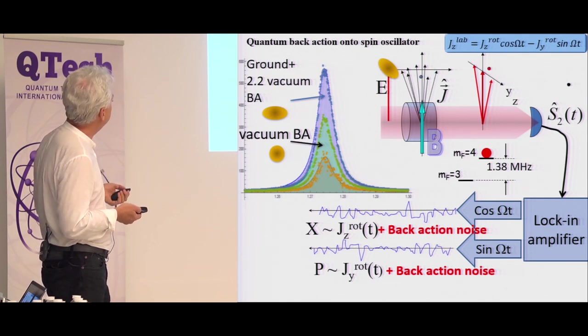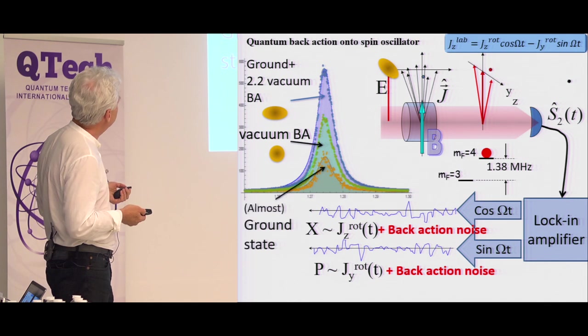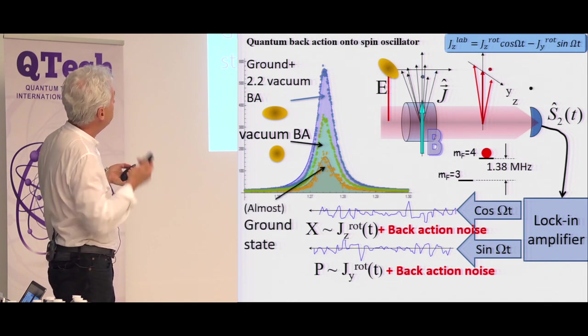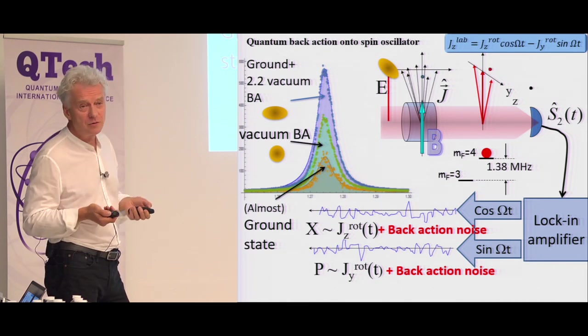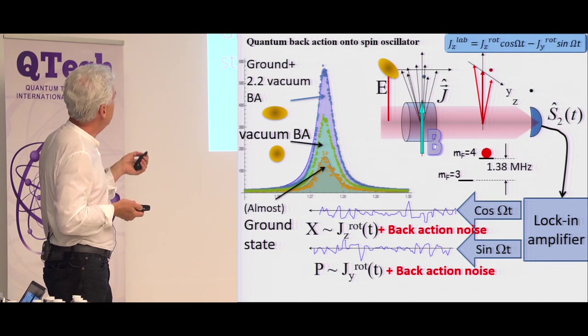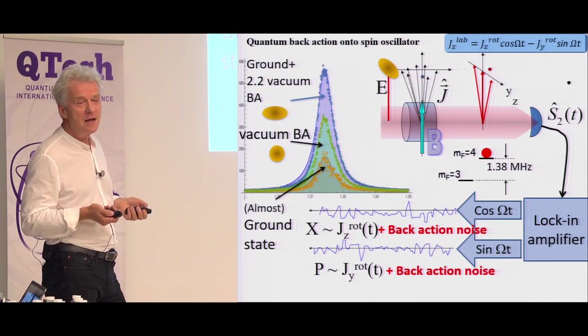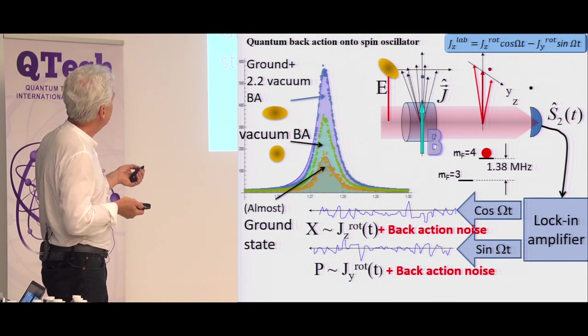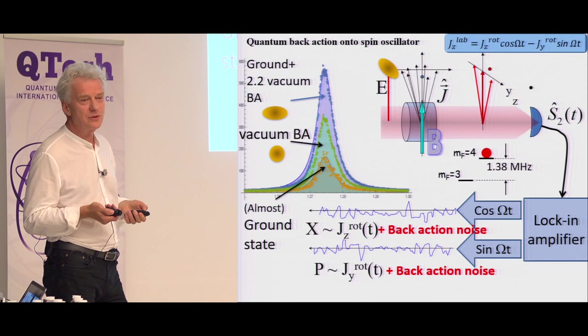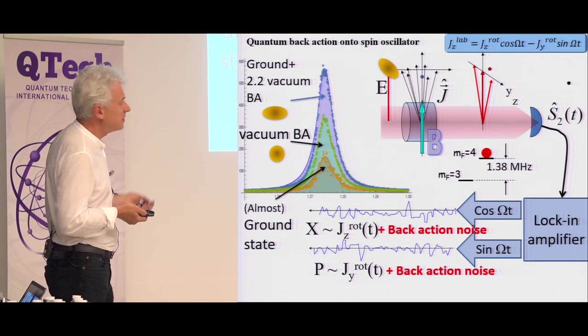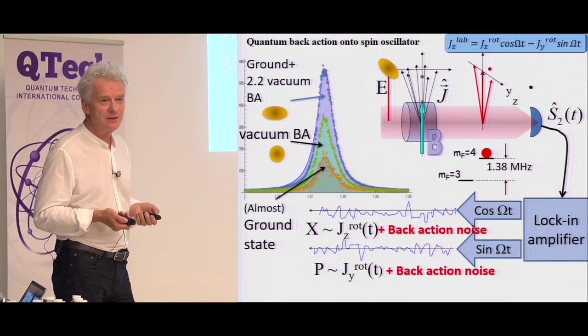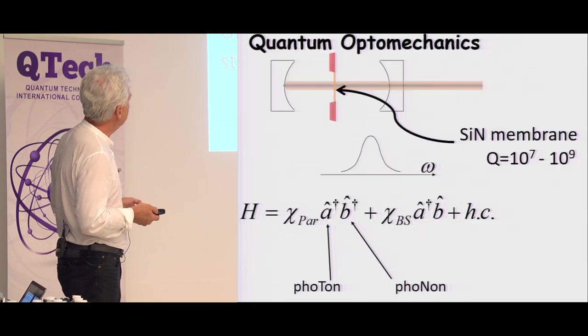So if we measure this, if we run this experiment, then essentially, by some careful calibration, we can say, OK, this is the noise spectrum at the Larmor frequency of 1.3 megahertz in this case. And this noise spectrum contains the quantum back action of the measurement and the intrinsic noise of the spin, which is nearly ground state of the spin. So the important part here is that we can indeed observe the quantum back action imposed by light on this oscillator. So that's a good starting point.